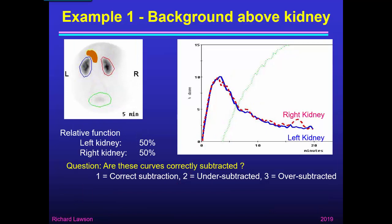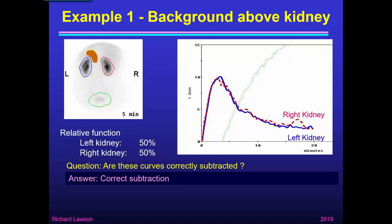Here I've taken a different background region above the kidney and applied it to both renogram curves. The relative function still comes out at 50%. I think that they're correctly subtracted — both curves do start properly from zero, so the correct amount of blood background has been subtracted.